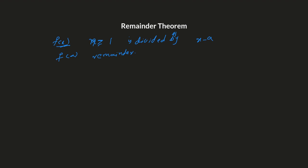Let's take an example. When a polynomial f of x equals x cubed plus 4x squared minus 2x plus 5 is divided by x minus 1, what would be the remainder?